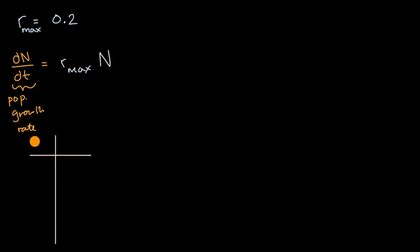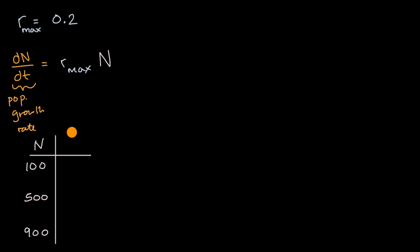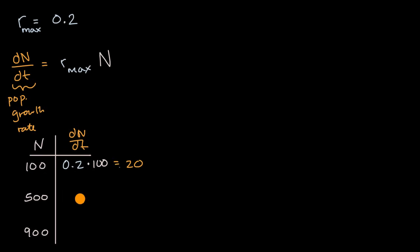Let's think about what the population growth rate will be for certain populations: when our population is 100, when it's 500, and when it's 900. When our population is 100, dN/dt is going to be 0.2 times 100, which is equal to 20. So we're going to grow per year by 20 when our population is 100.